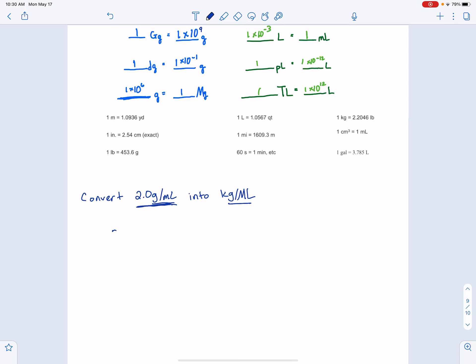This right here is 2.0 grams, and that's obviously per milliliter. Now look, in chemistry, if you've got something like that, we like to have numbers everywhere. So this is an understood one. It's like saying 2.0 grams divided by one milliliter. That's how many grams are in one milliliter of the substance.